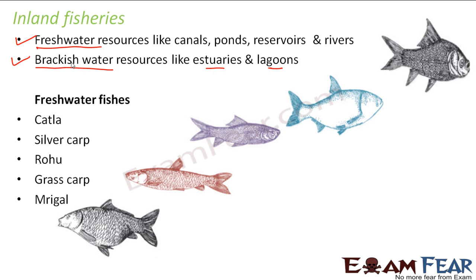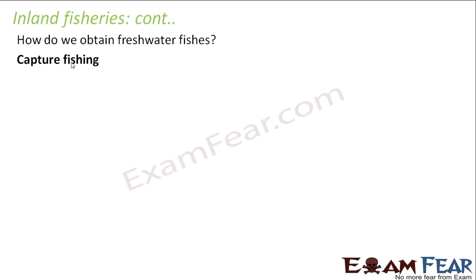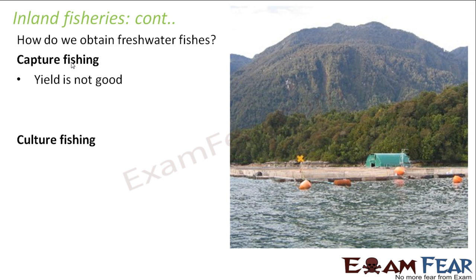So far we talked about why we do fish production, where we find fishes, and how we get fishes. Now for inland fisheries, the first option is capture fishing, but the yield from capture fishing is not that great. Even though people go with fishing nets to rivers or ponds, the yield is insufficient to meet demand. So the yield of capture fishing is not that great as far as inland fisheries is concerned.